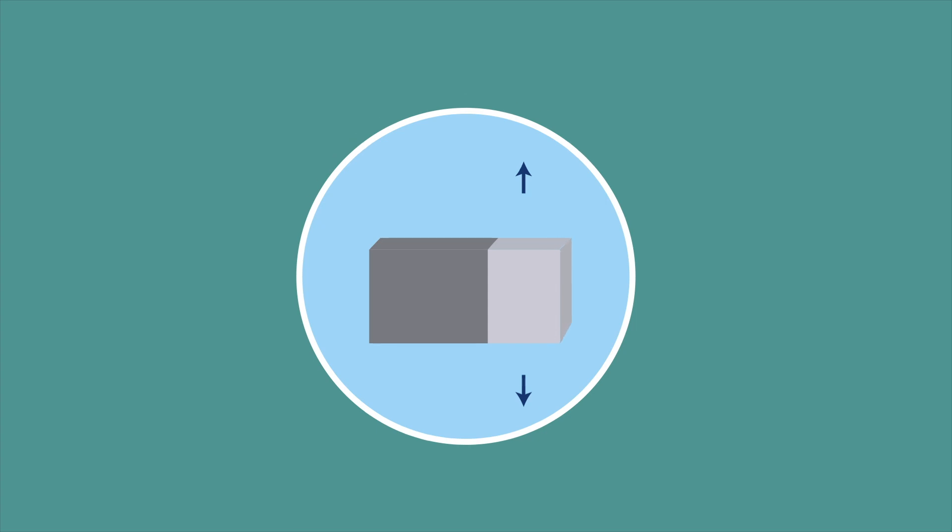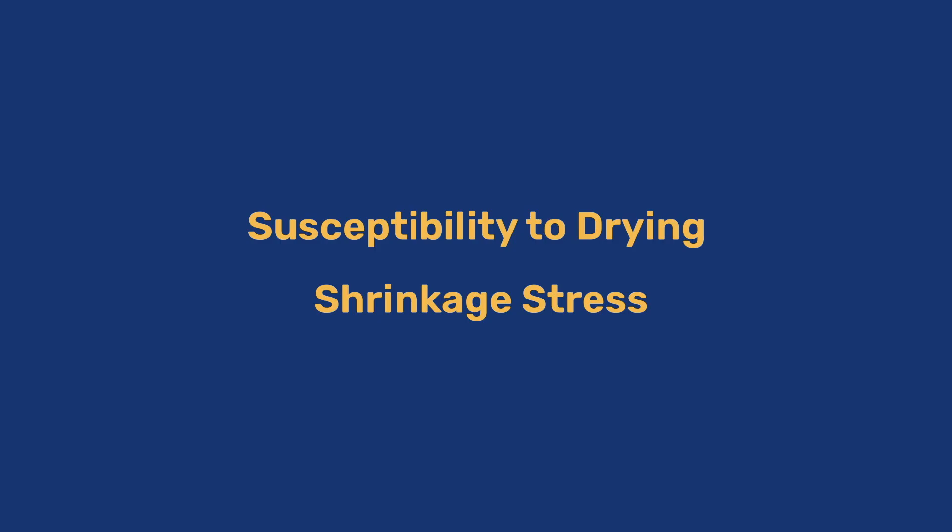In a previous video, we saw that damaging tensile stresses can arise from inhomogeneous deformations caused during the drying of an initially saturated body. In this video, we take a closer look at factors affecting this process to better understand the role of exposure conditions.